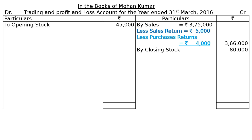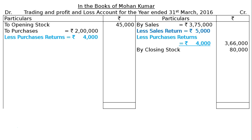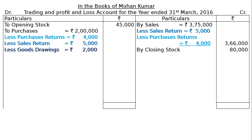Next, by closing stock rupees 80,000. On the debit side: to opening stock rupees 45,000. To purchases rupees 2,00,000 less purchases returns rupees 4,000 — that is the usual deduction. As per adjustment part A, sales returns of rupees 5,000 are included in purchases, so less sales returns rupees 5,000.